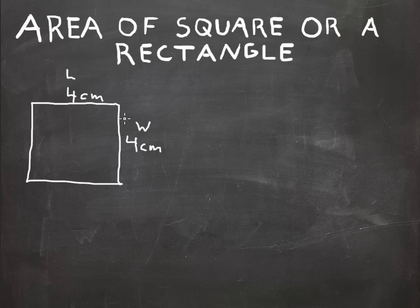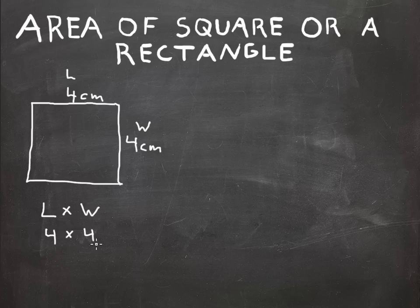So 4 times 4 is 16. Length times width, which is 4 times 4, equals 16.